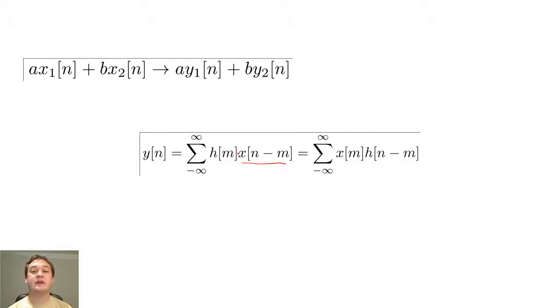The superposition property tells us that the output can be described as a summation of different inputs that are multiplied by constants. The convolution sum essentially breaks the filter's manipulation of the input into parts, or separate inputs, and recombines these parts later using a linear combination of addition and multiplication.